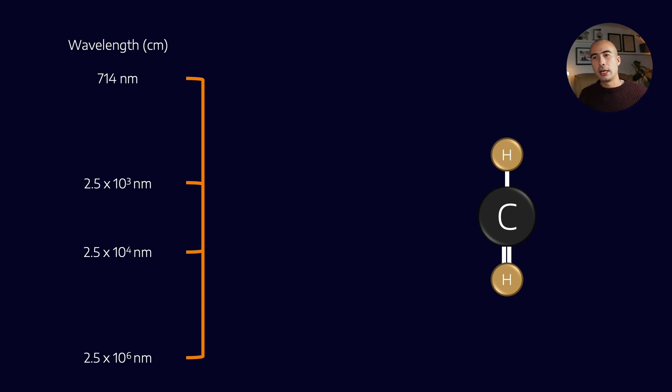Now, whether it chooses to absorb that energy or not is dependent on a few things. It's the mass of the two atoms involved in the bond. It's the type of bond. So here you'll have seen the single bond responded to a different wavelength than the double bond did, as an example.